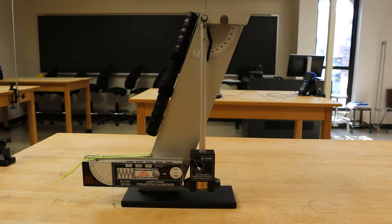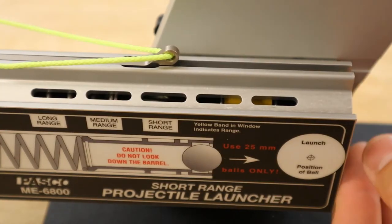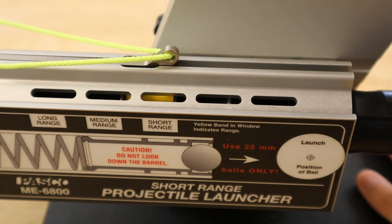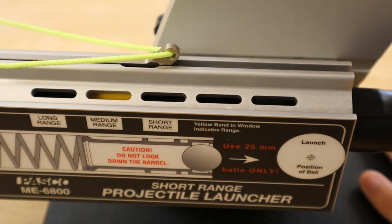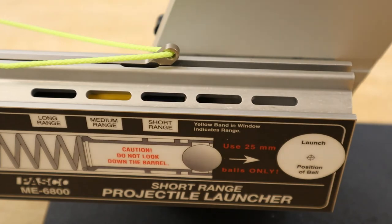To set up the next series of trials, we will now compress the spring to the second setting. This means that two clicks should be heard, and the indicator should appear farther along the side of the launcher.